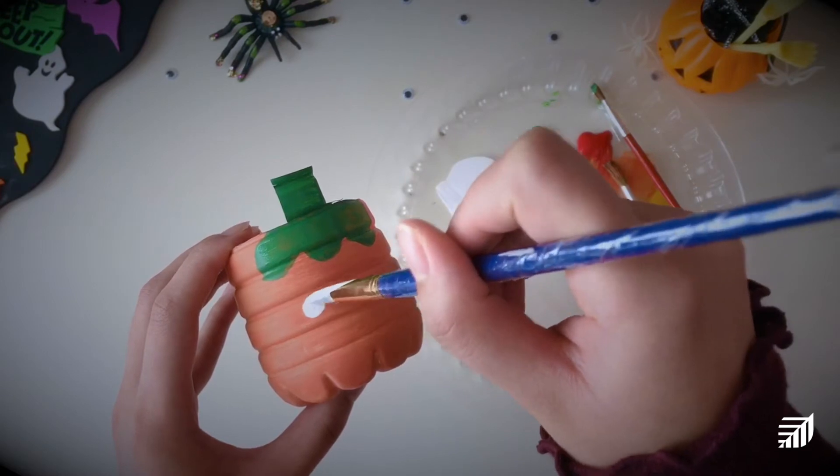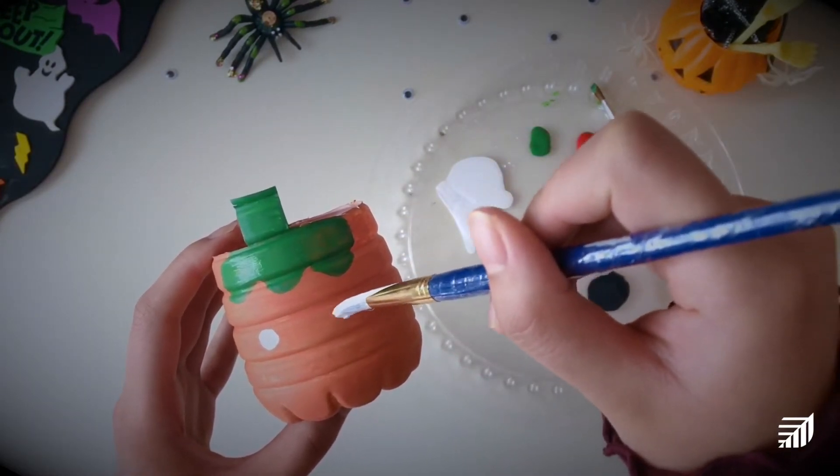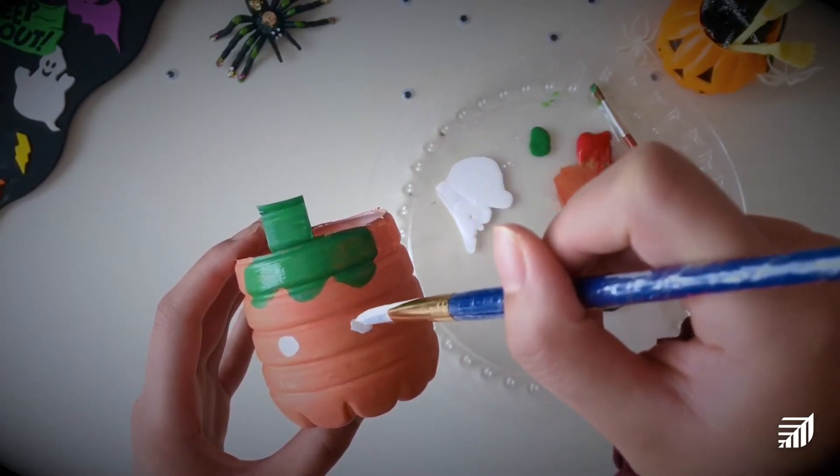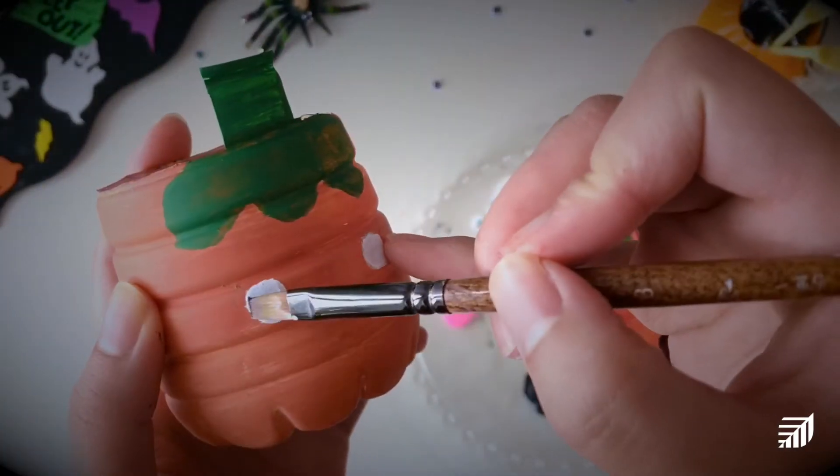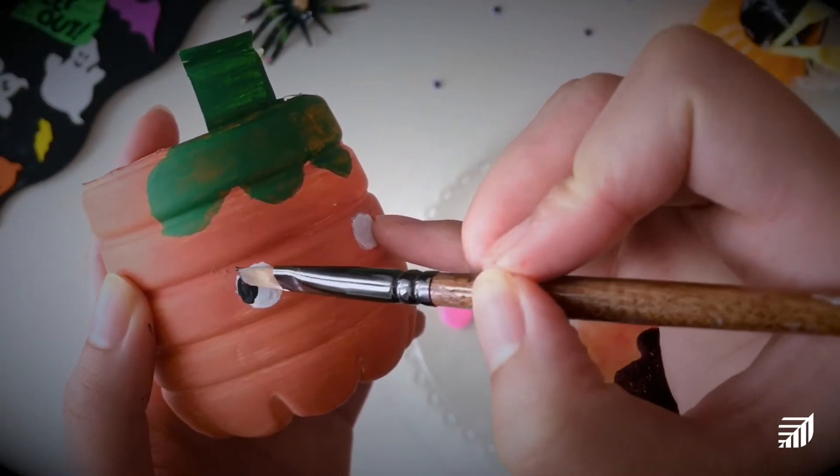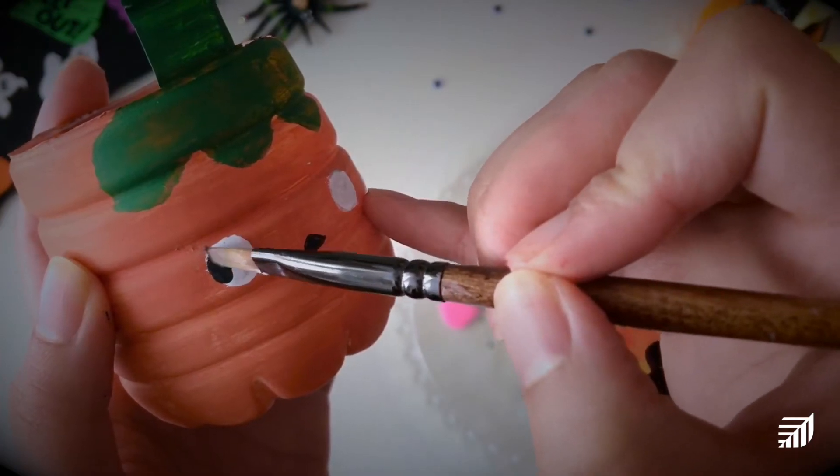Once that looks good, we're going to move on to the eyes. I'm going to start with two white circles for the eyes and then once that paint has dried, I'm going to go in with my black paint or you can use a sharpie to add some expression to the face.